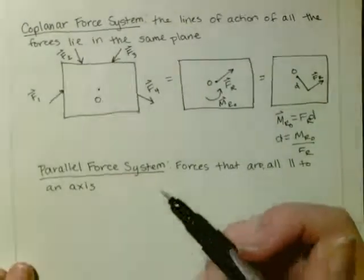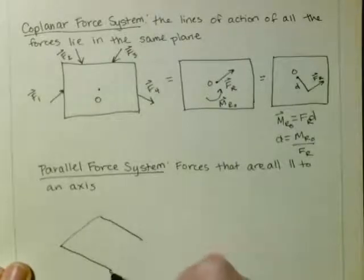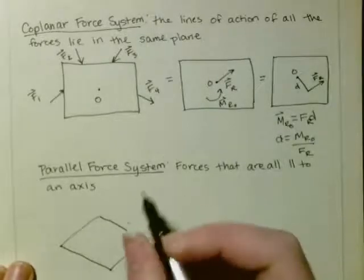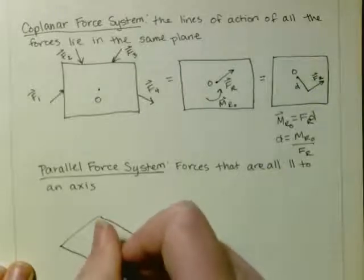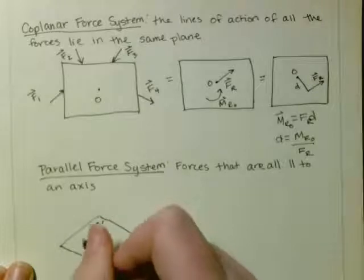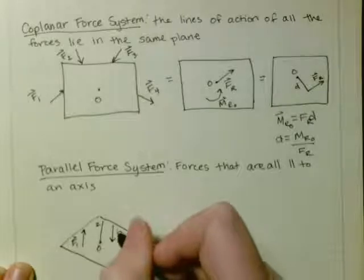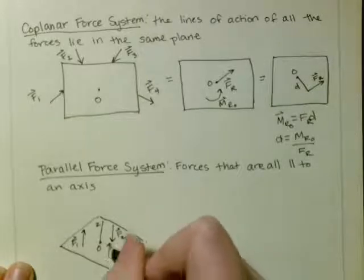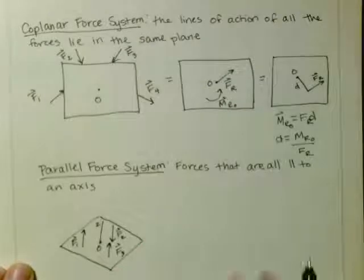So say we had our surface. This is our point O. This is our Z axis. We had F1, F2, and F3. So we've got all these parallel forces.